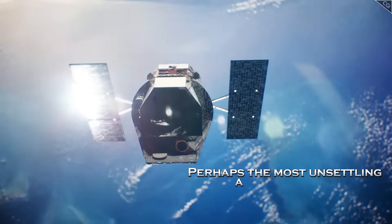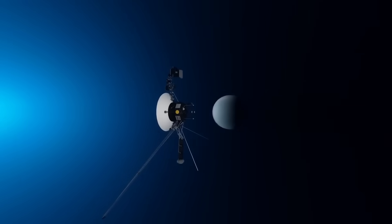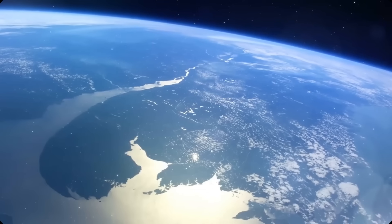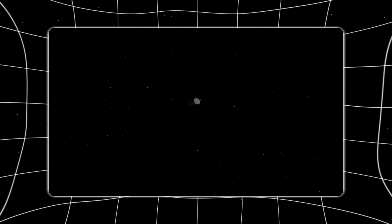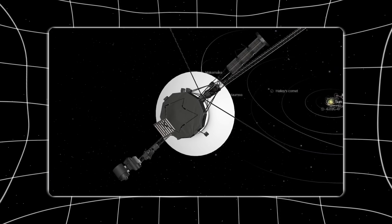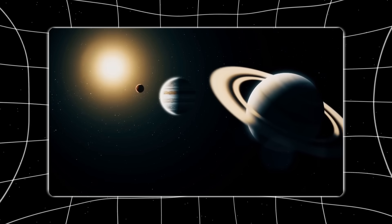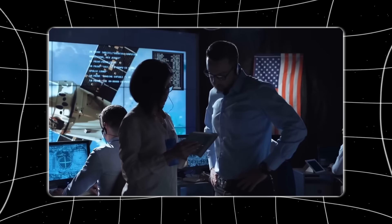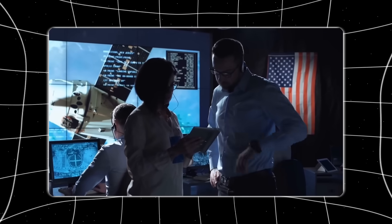Perhaps the most unsettling aspect of all is timing. Voyager 1 is revealing complexities in interstellar space at a moment when humanity is technologically incapable of responding to them. We cannot send another probe quickly. We cannot reposition Voyager. We cannot repair or upgrade it. The data arrives decades before we can act on it. This creates a gap between knowledge and capability.